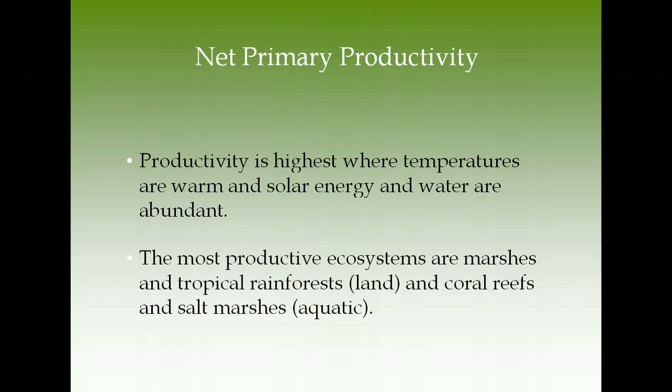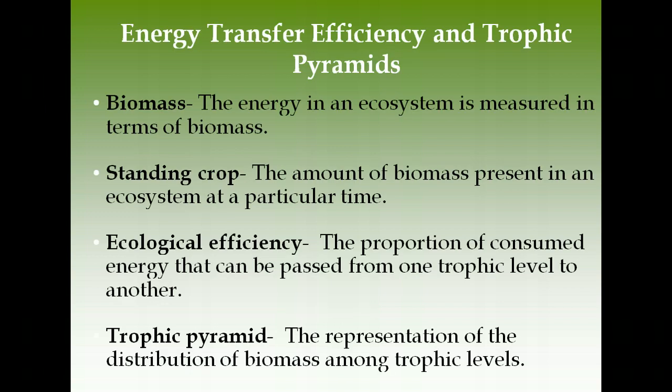Productivity is highest where temperatures are warm and solar energy and water are abundant. The most productive terrestrial ecosystems are tropical rainforests, which have high temperatures and high rainfall. Coral reefs are the most diverse and productive aquatic ecosystems in tropical areas. Salt marshes, found along coastlines as a transition zone before the ocean — many in the southeast like Florida — are also very productive.